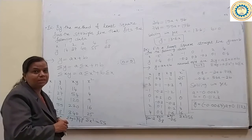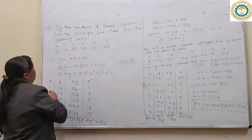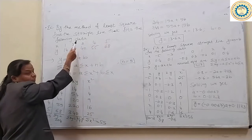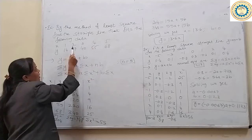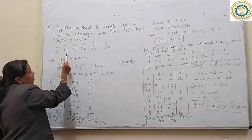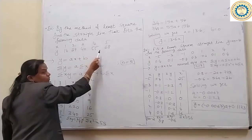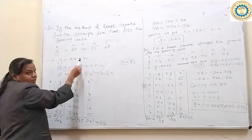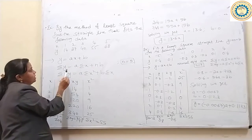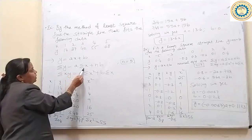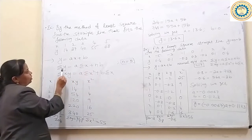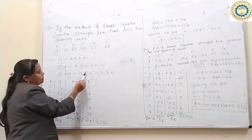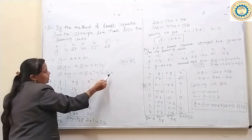Let us discuss example 1 on straight line form. By the method of least squares, find the straight line that fits the following data. X values are 1, 2, 3, 4, 5 and Y values are 14, 27, 40, 55, 68. The equation is Y equal to AX plus B. First, write the normal equations: summation of Y equal to A into summation of X plus N into B, and summation of XY equal to A into summation of X square plus B into summation of X.